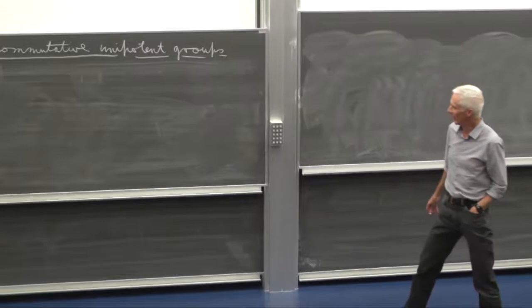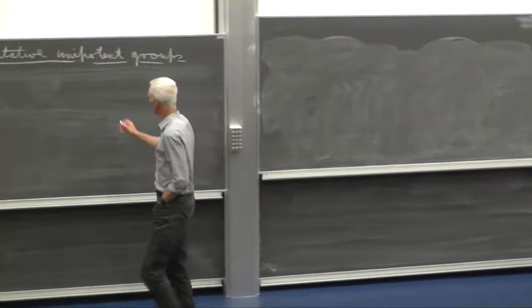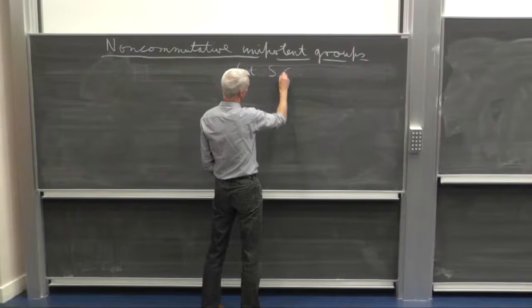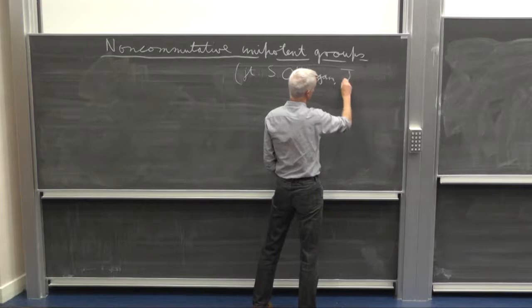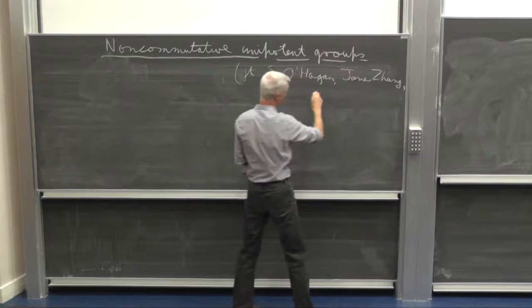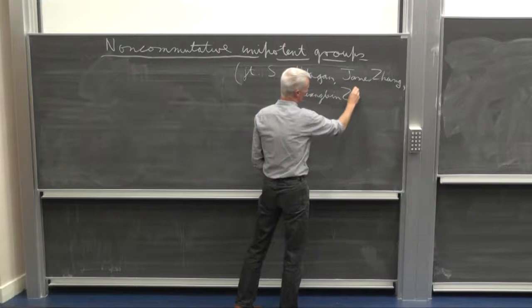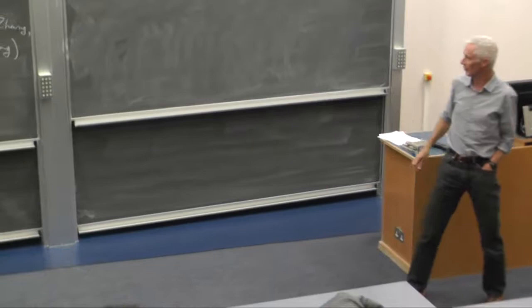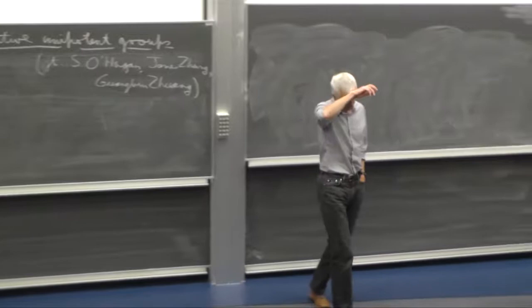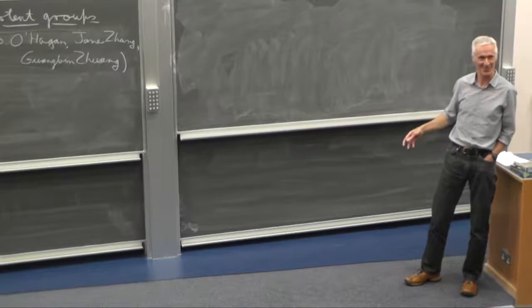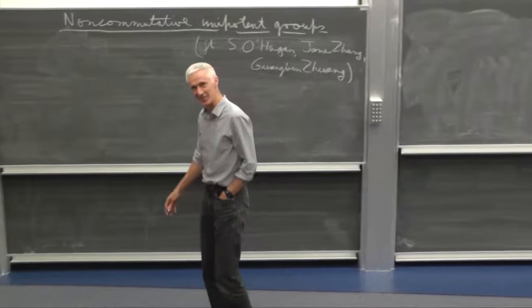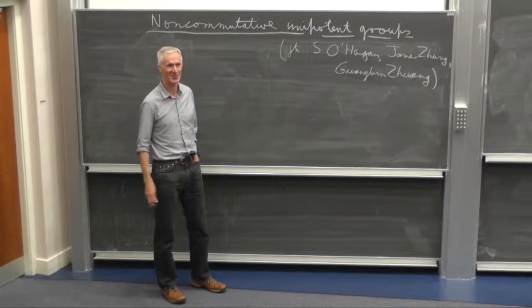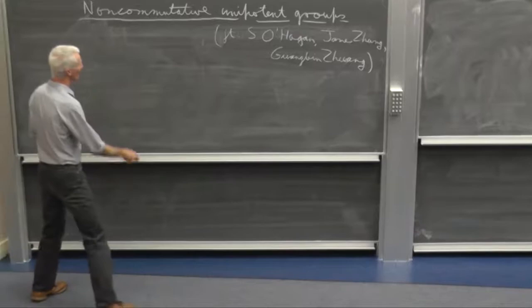I'll try and interject some kind of meta-mathematical comments from place to place. So at some point behind this, this is joint work with a former student of mine, Steven O'Hagan, a collaborator James Wang from Seattle, and one of James' students, Guan Bin. But the only person on my list, including myself, who really will have a result on the board today is Guan Bin, who is finishing his PhD this year.